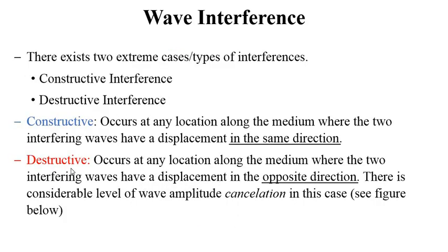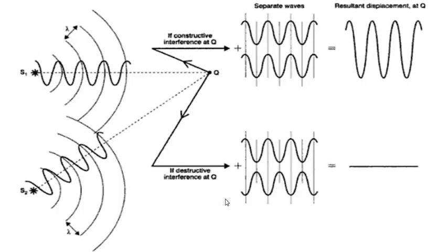Destructive interference, on the other hand, occurs at any location along the medium where the two interfering waves have a displacement in the opposite direction. There is some kind of cancellation that is taking place as a result of this. We want to look at a figure here and see this phenomenon in a clear way.